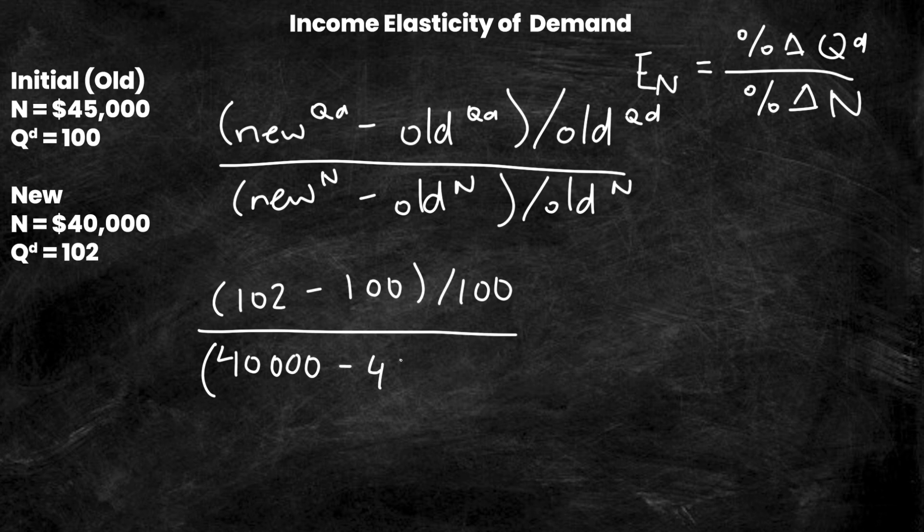New N, which is 40,000, minus old N, which is 45,000, all over old N, which is 45,000. So what am I left with? Well, 102 minus 100 is 2, so I have 2 over 100, which is simply 0.02. And then on the bottom, I have 40,000 minus 45,000, which is negative 5,000 over 45,000.